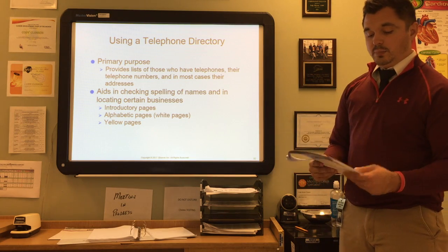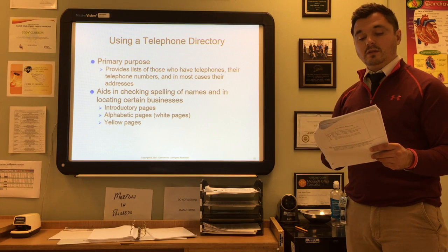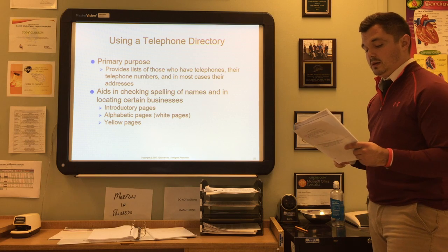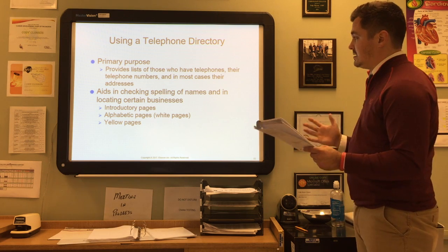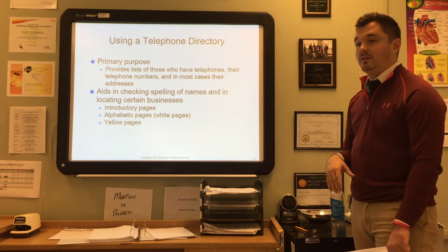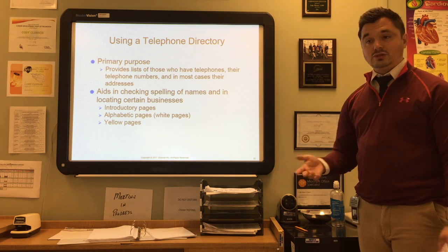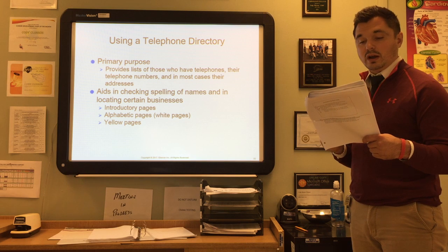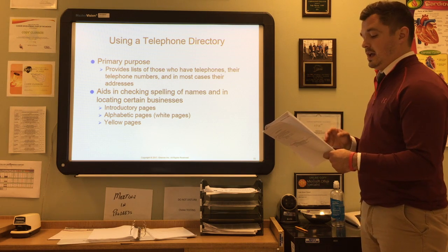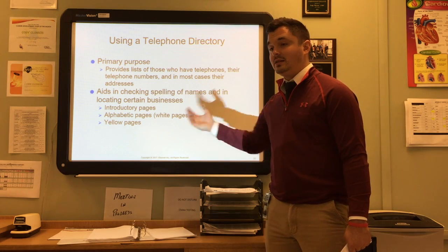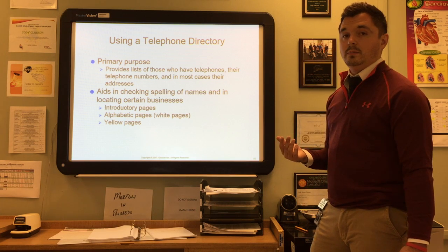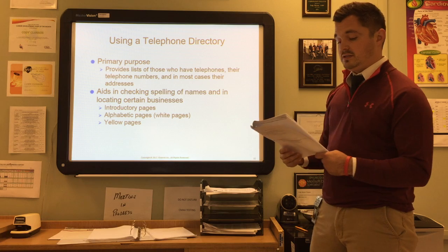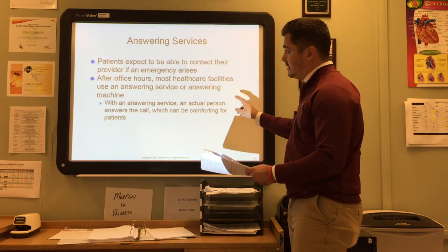When you start a new job, take a few moments to become familiar with your local telephone directory and use it frequently for getting information quickly. The primary purpose of a telephone directory is to provide a list of those who have telephones, their numbers, and in most cases their addresses. It also aids in checking spelling of names and locating businesses. In a print telephone directory, color coding differentiates residential listings (white pages) from business and commercial listings (yellow pages).